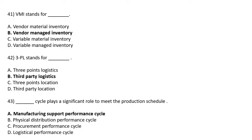3PL stands for — Option A: Three Point Logistic, Option B: Third Party Logistic, Option C: Three Point Location, Option D: Third Party Location. The correct answer is Option B: Third Party Logistic.